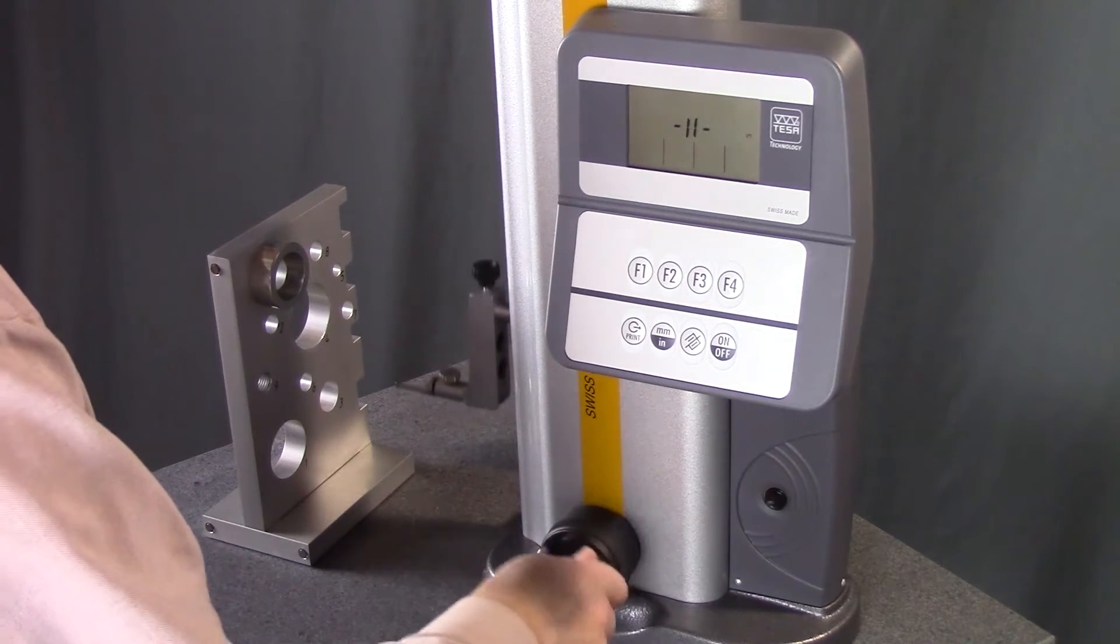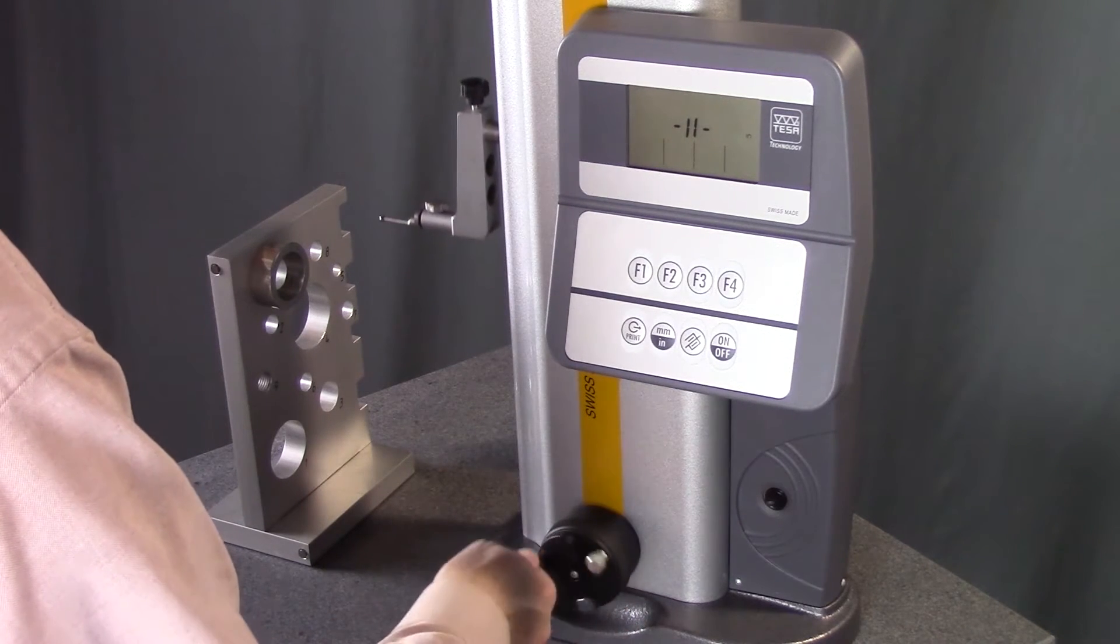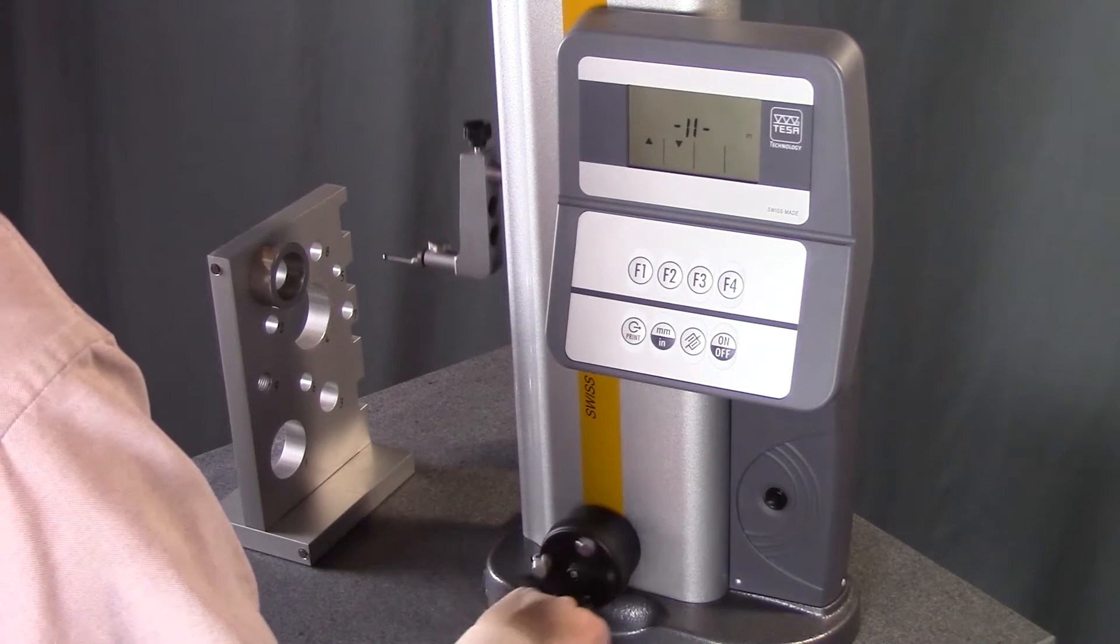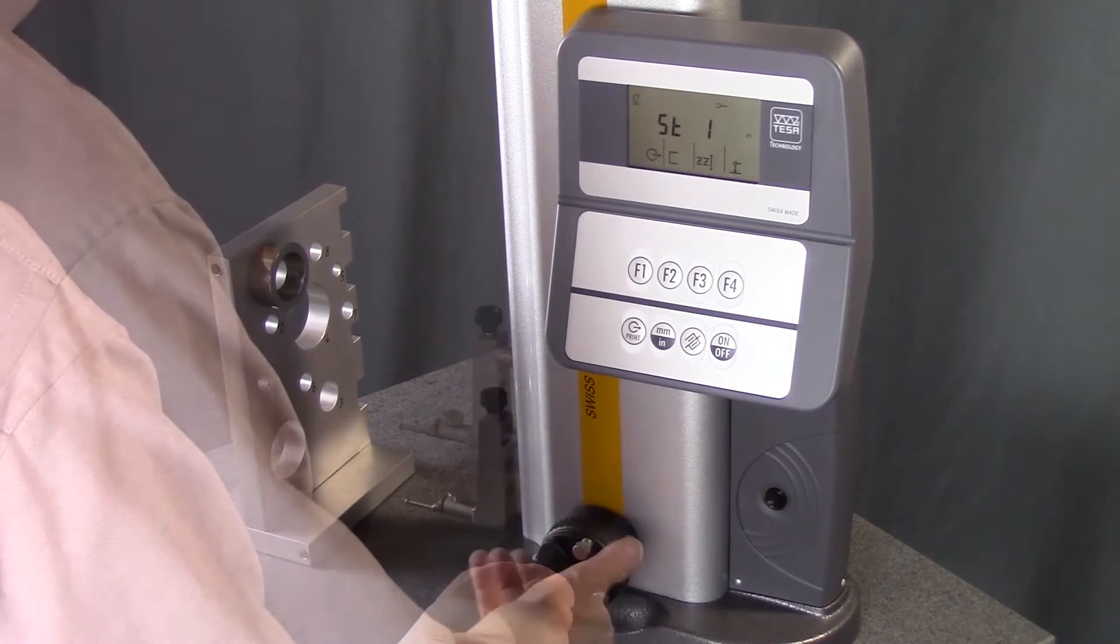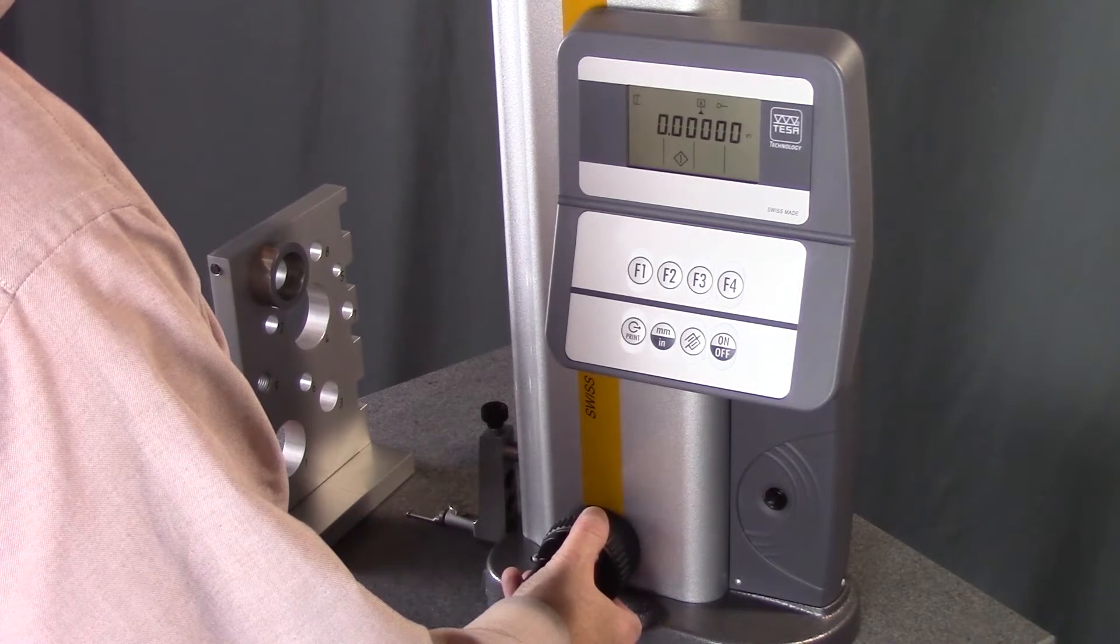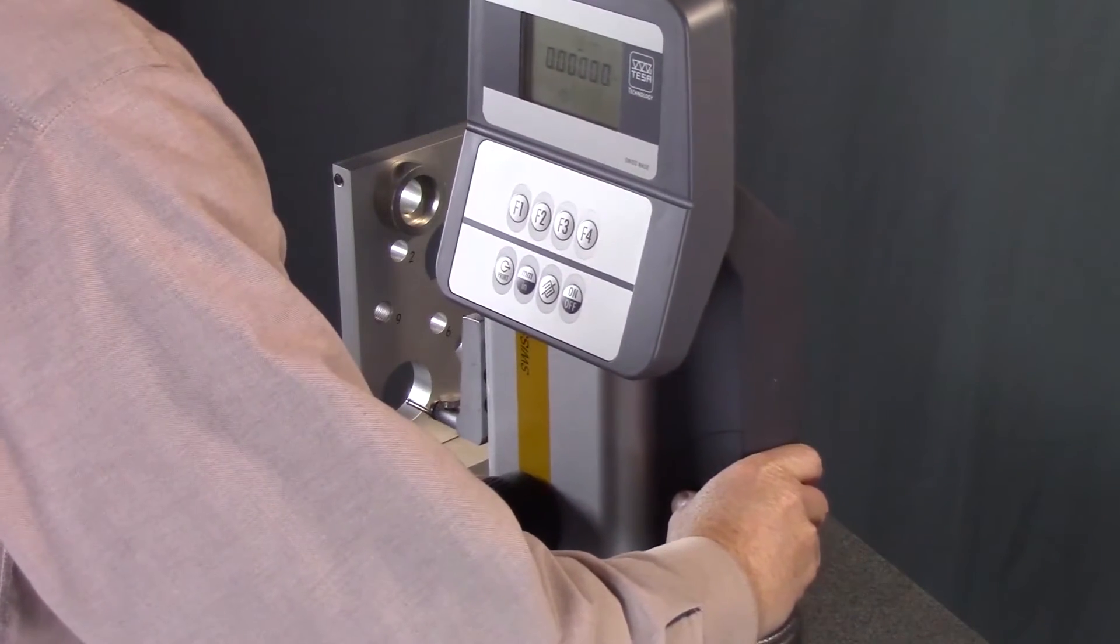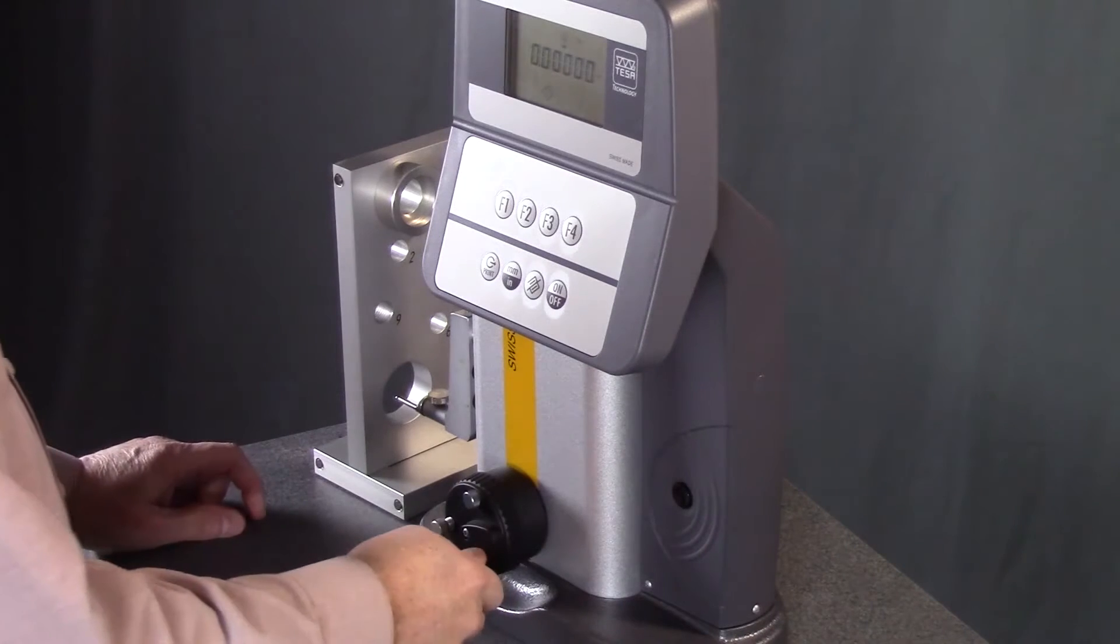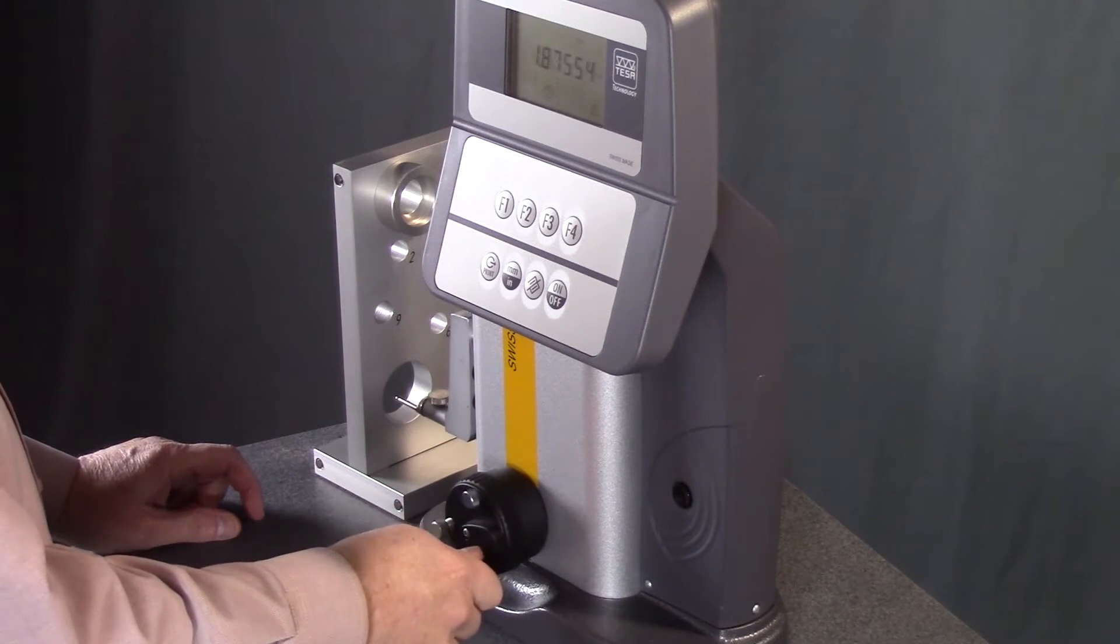Once you've turned on your Tasa height and cleared the scale, you can establish a datum while in start one mode by touching any surface one time with the probe. You'll hear the gauge beep and the display will read zero. From this point, every measurement you take will instantly relate back to your datum and the measured result will be displayed.